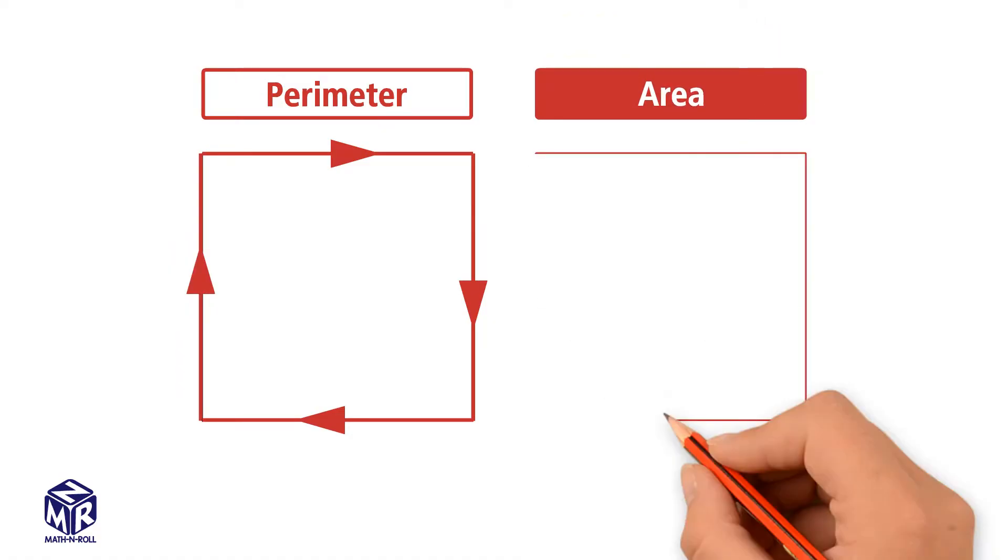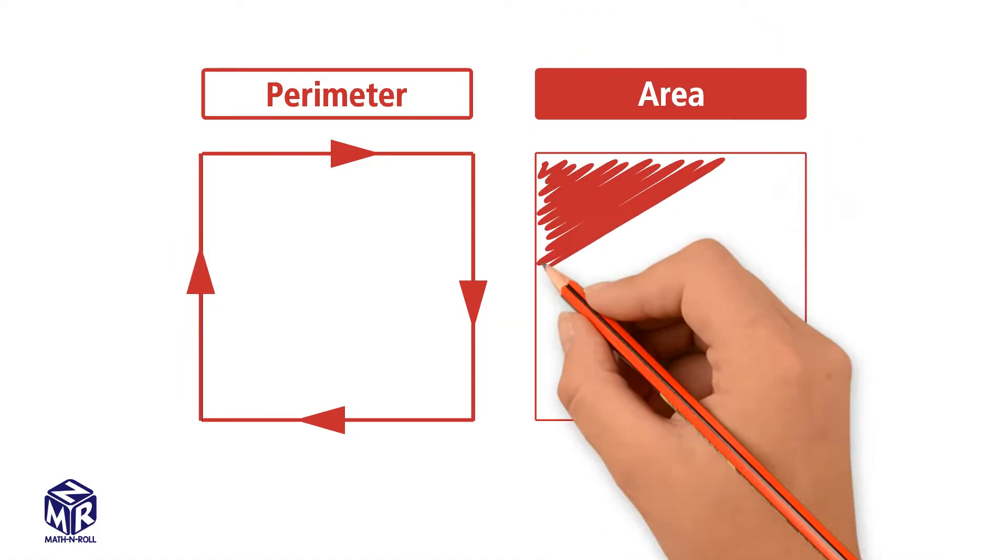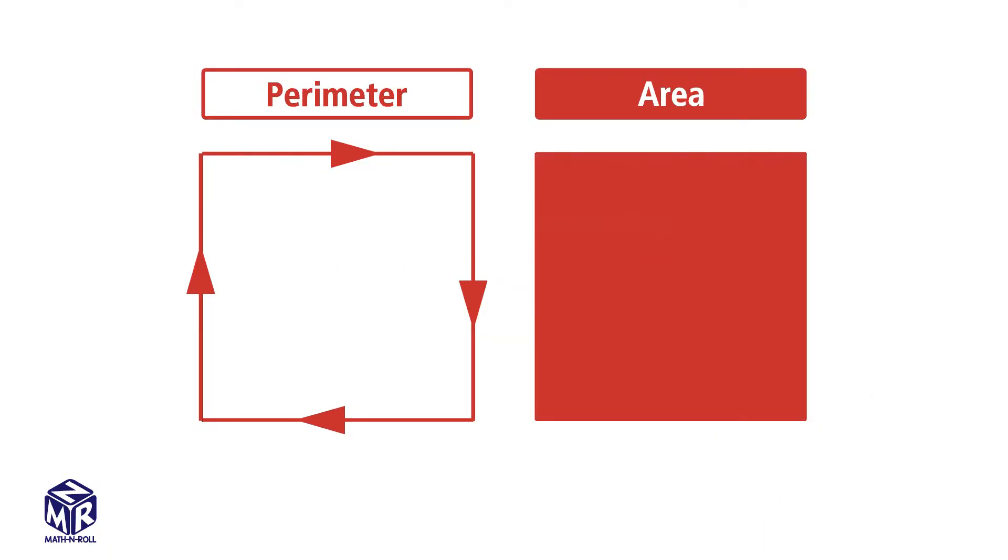Area tells us the number of unit squares needed to fill a flat surface. Can rectangles have the same area, but different perimeters?